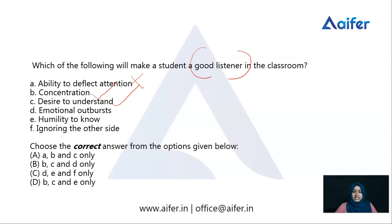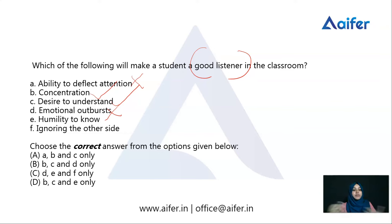Option D: Emotional outburst. Is that a necessary quality to be a good listener? In fact it's a negative quality. Emotional outburst points to emotional immaturity in students, and those immature emotional reactions cannot be considered a characteristic feature of a good listener — so emotional outburst can be eliminated. Option E: Humility to know. Humility means being humble, considering others' viewpoints. Being humble to know what the other person is communicating is a very good feature that has to be possessed by a good listener, so this is also in.